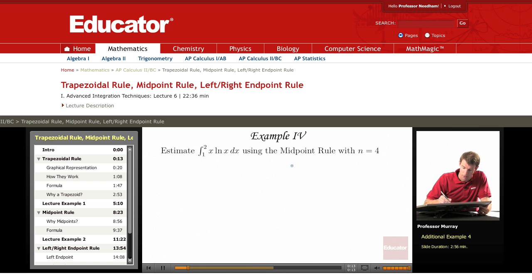Now, here b is 2, a is 1. So delta x, which is b minus a over n, is 2 minus 1 over 4, so that's 1/4.